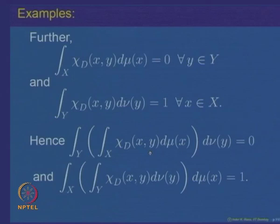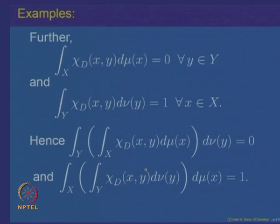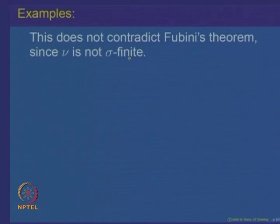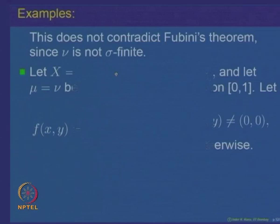This seems to contradict Fubini's theorem since χ_D is non-negative and the two iterated integrals are not equal. However, this is not a contradiction because not both measures are sigma finite. The Lebesgue measure is sigma finite, but the counting measure on [0,1] is not — the counting measure of [0,1] is infinite and [0,1] is uncountable, so it cannot be divided into countably many pieces of finite measure. That is why Fubini's theorem does not apply.